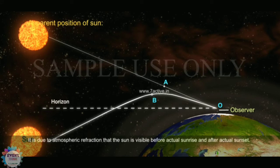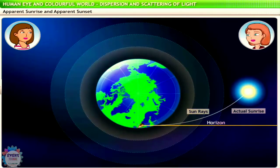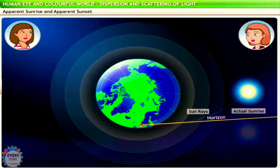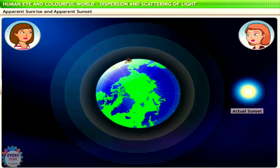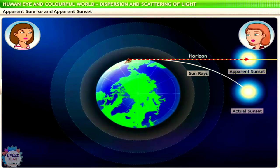It is due to atmospheric refraction that the sun is visible before actual sunrise and after actual sunset. When the sun is just below the horizon, its rays enter Earth's atmosphere and are refracted towards the earth. The refracted rays reach us, making it appear as if the sun has already risen above the horizon — this is the apparent sunrise. The actual sunrise occurs when the sun actually crosses the horizon. Conversely, the apparent sunset occurs slightly later than the actual sunset, since the light from the sun, already below the horizon, refracts through the atmosphere, enabling us to see the apparent sunset even after the sun has already set.